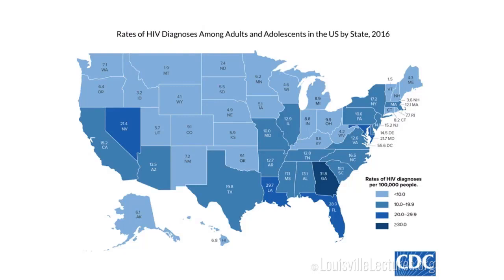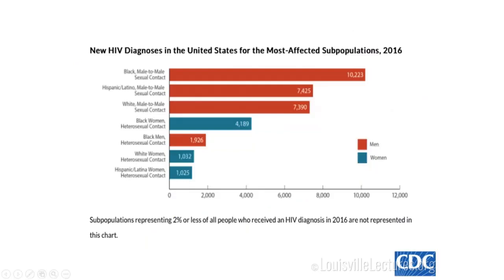This map shows the impact of HIV here in the U.S. Kentucky is in the lighter blue, so not really a hotbed of HIV. But Georgia, D.C., Nevada, and Florida have higher densities of HIV cases — D.C. is actually one of the highest. Looking at the distribution of risk groups, this is still a disease of disparities. The highest risk group is Black males with male-to-male sexual contact, and Black women with heterosexual contact are also leading compared to white and Hispanic women.